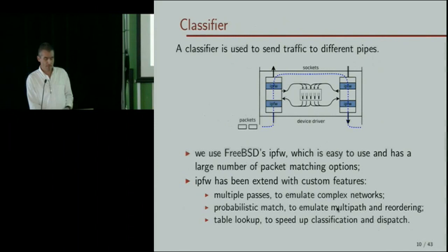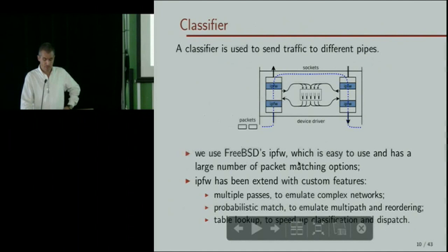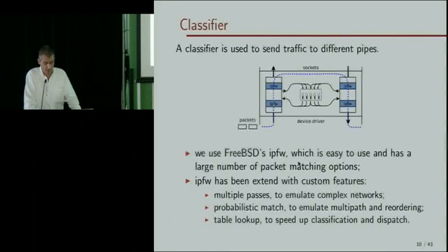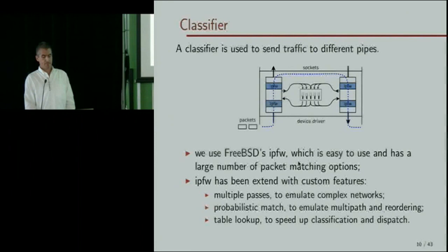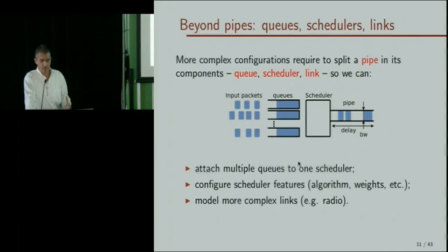The classifier uses IPFW, the standard firewall in FreeBSD. I've done a lot of work to make it more efficient, more flexible, and scalable for use with DummyNet — meaning we want to handle thousands of pipes and rules. One thing we had to add to the classifier was the ability to have multiple passes through it once a packet comes out of the pipe, enabling more complex topologies by looping through the emulator multiple times.